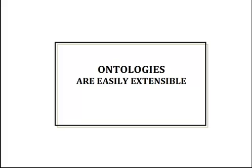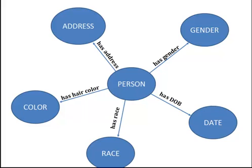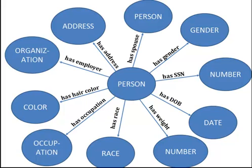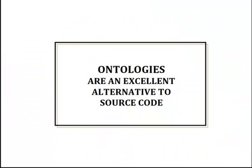Ontologies are also easily extensible. Rather than rewriting lines of code, new relationships can easily be added to existing ontologies. We simply add additional relationships which link person to new concepts. This process continues and ontologies are extended without disrupting the work that is ongoing or already completed.